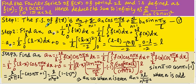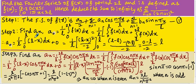Under the Fourier series expansion of f(x), the Fourier coefficients a0, an, and bn are to be found out. Step number 2 is to find a0.